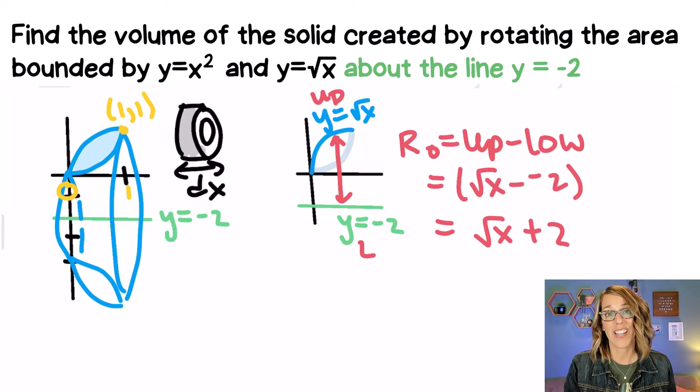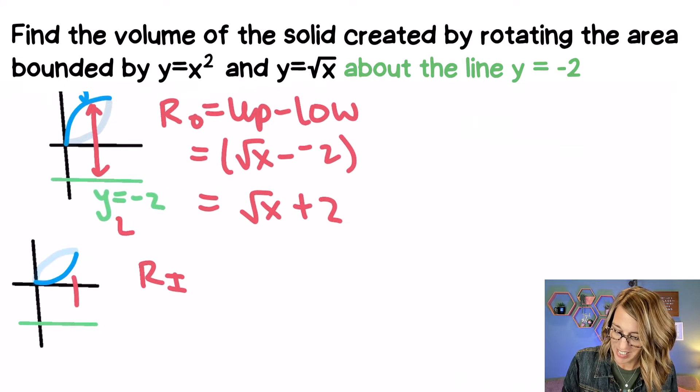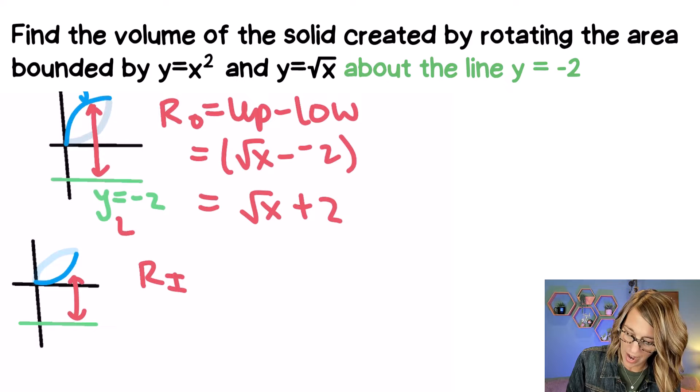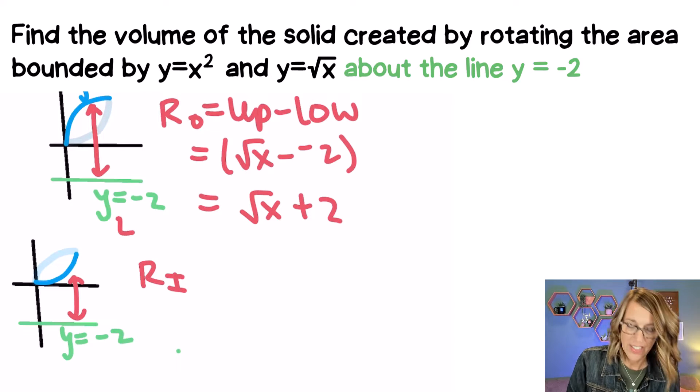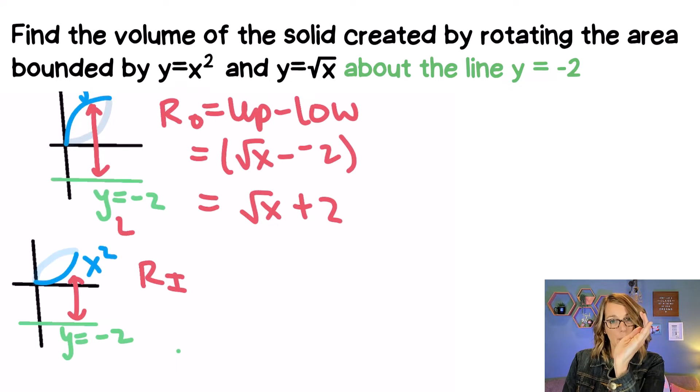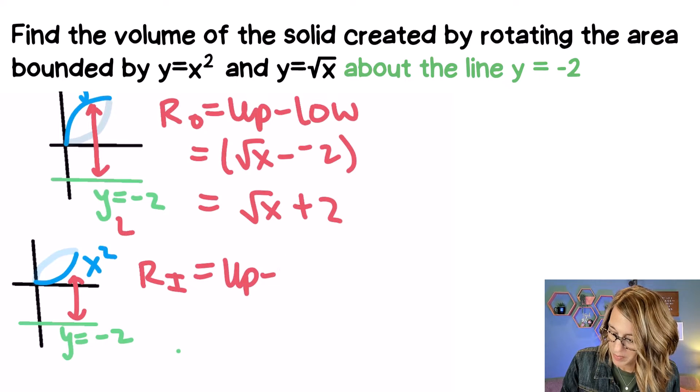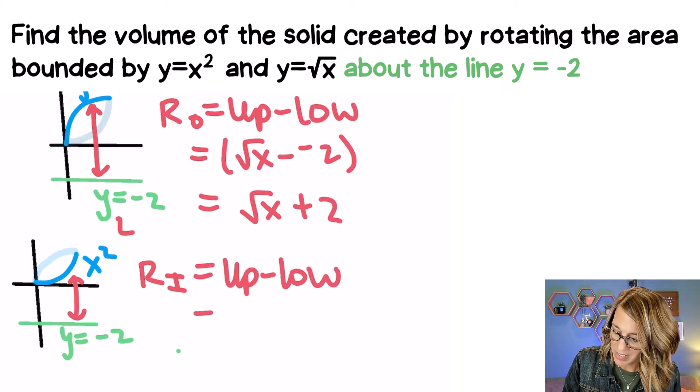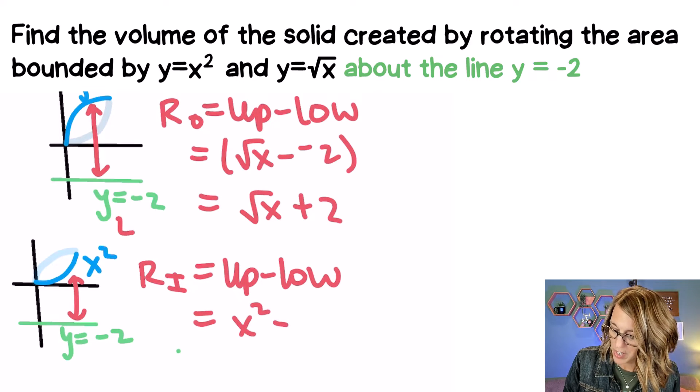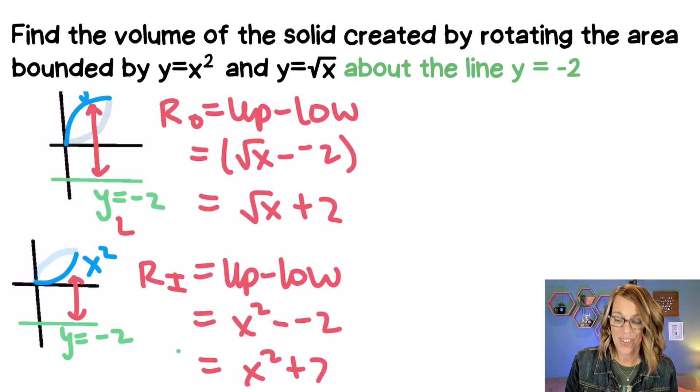Let's do the same thing for the inner radius. Now that inner radius is going to be the distance between my axis of revolution y equals negative 2 and that lower curve. That lower curve is y equals x squared. So again I'm doing upper minus lower. So upper minus lower. I'm going to set this up in very much the same way. Upper minus lower. That upper function is x squared minus that lower function which is negative 2. Getting that distance in between. And I've got x squared plus 2.